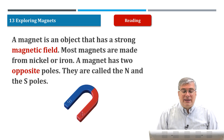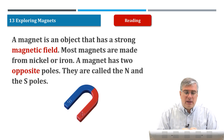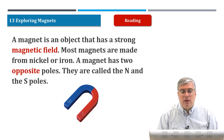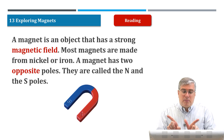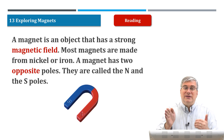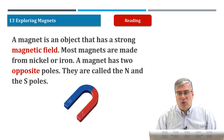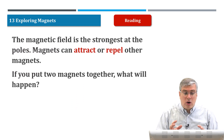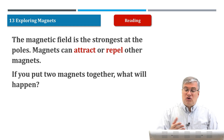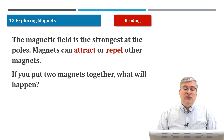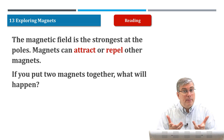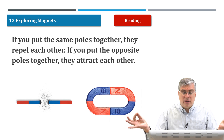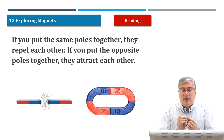A magnet is an object that has a strong magnetic field. Most magnets are made from nickel or iron — nickel and iron are two types of metal. A magnet has two opposite poles. They are called the north and the south poles. The magnetic field is the strongest at the poles. Magnets can attract or repel other magnets. If you put two magnets together — if you put the same poles together, they repel each other. If you put opposite poles together, they attract each other.